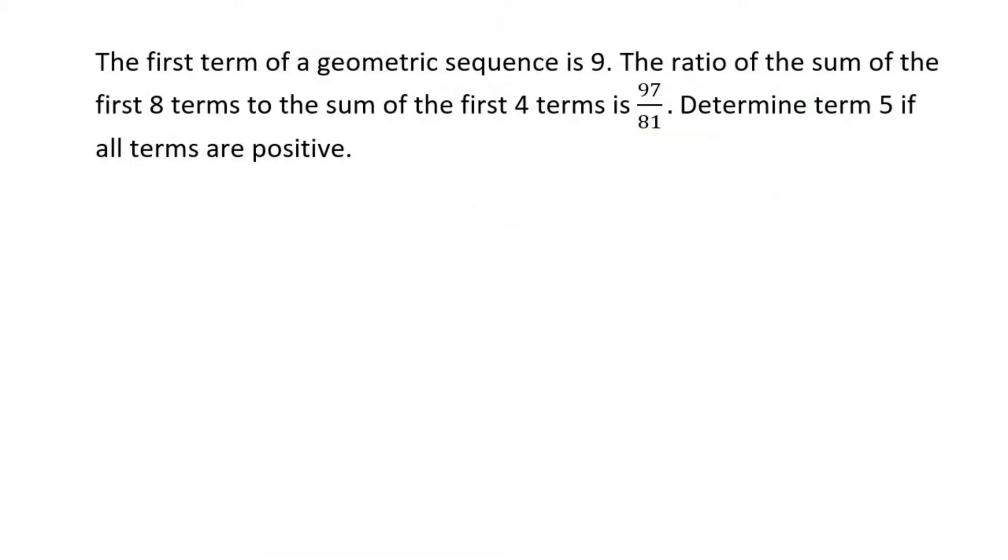They tell us that the first term of a geometric sequence is 9, and then this one's quite interesting. The ratio of the sum of the first 8 terms to the sum of the first 4 terms is that. Determine term 5 if all terms are positive.